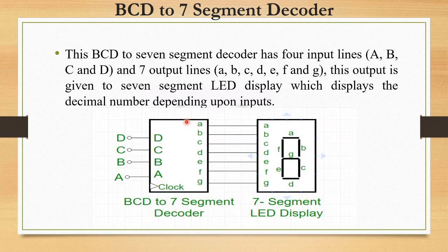This is the block diagram of the BCD to 7-segment decoder. There are 4 inputs — A, B, C, D — and 7 outputs — A, B, C, D, E, F, G — which are connected to a 7-segment LED display. The segments are arranged so that when the correct combination is illuminated, a decimal digit is displayed.